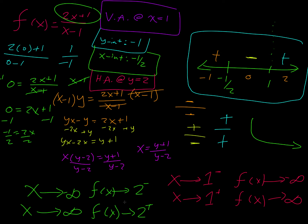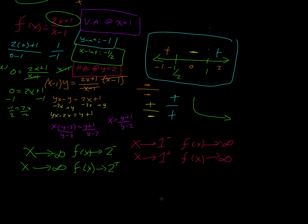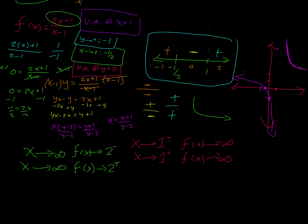Sketch the function showing the features you have found. We have a vertical asymptote at 1, a horizontal asymptote at 2, an x-intercept at negative 1 half, and a y-intercept at negative 1. As we approach 1 we go down — so it's going to look like that, and then it's going to look like that. All right, there's our function. If you have additional questions, please come to Math Lab.